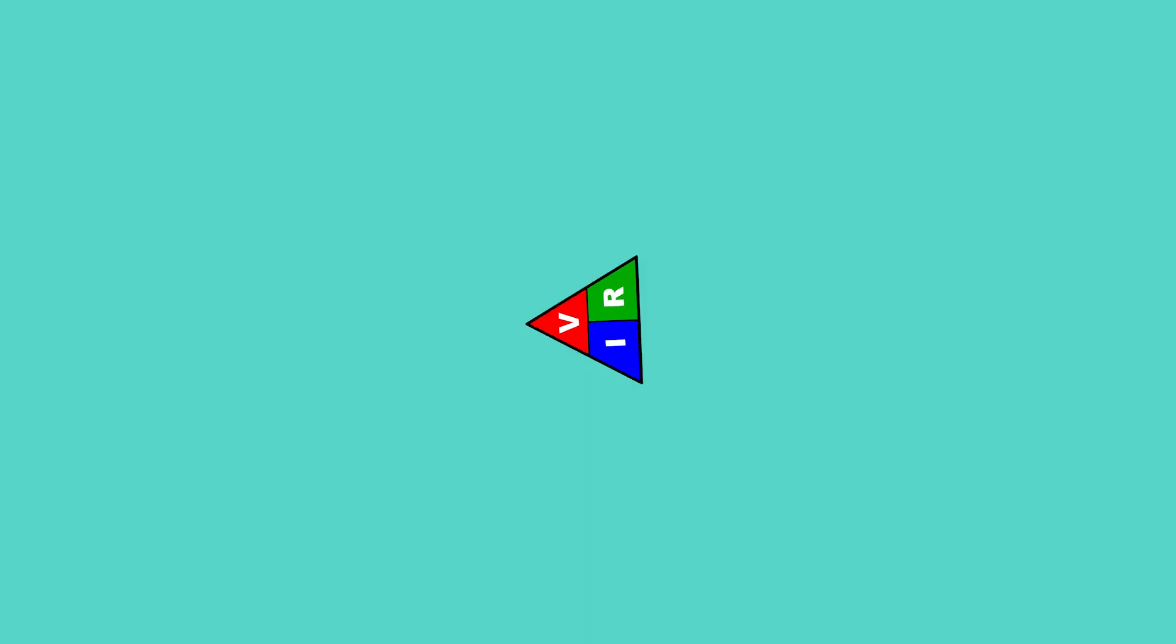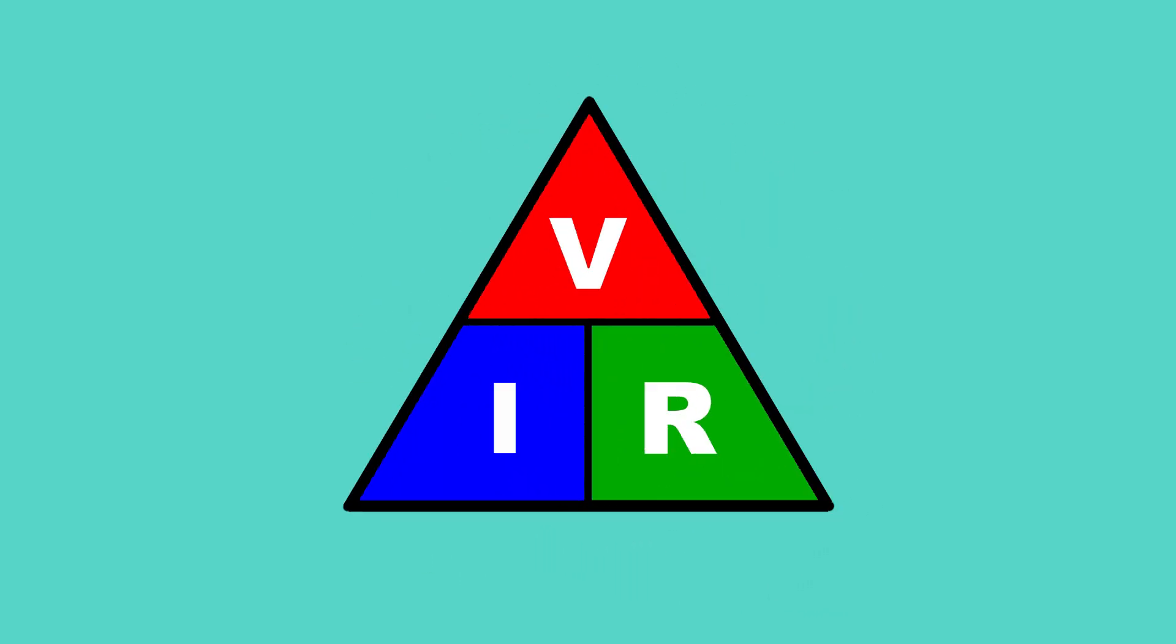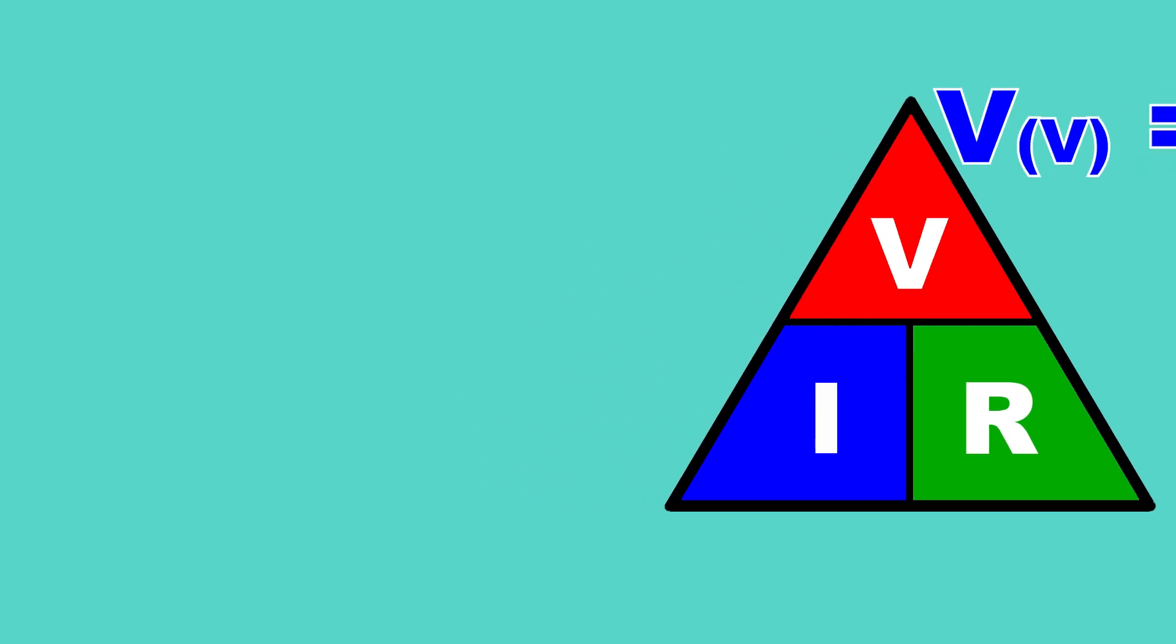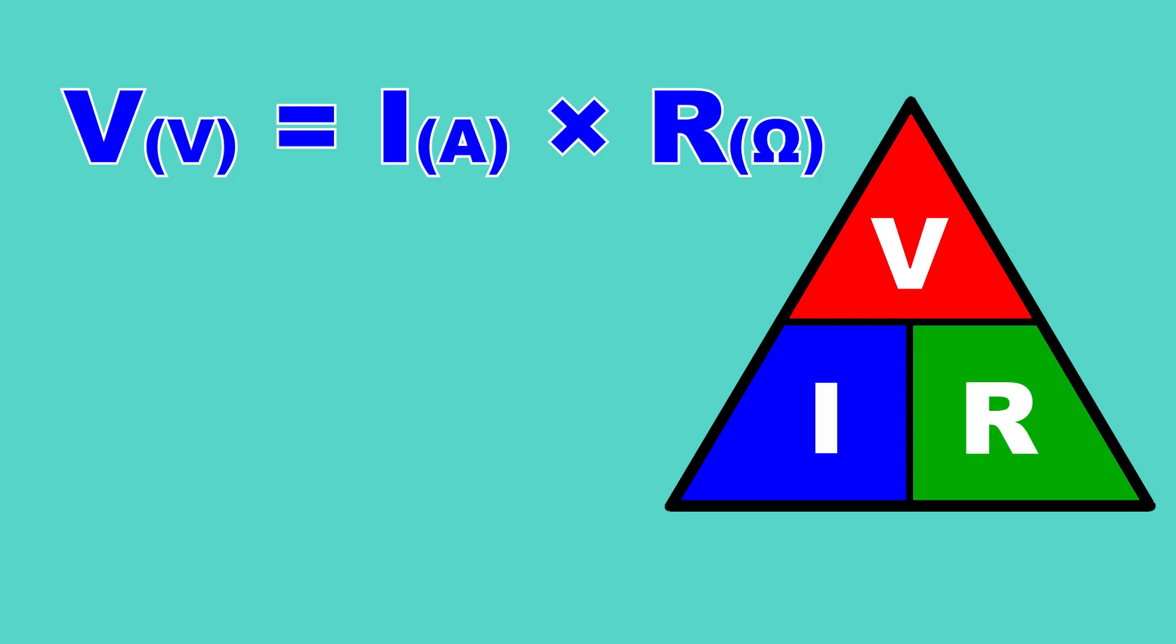Now let's use Ohm's law to figure out what resistor we need. Ohm's law says V equals I times R. That means voltage in volts equals current in amps times resistance in ohms.